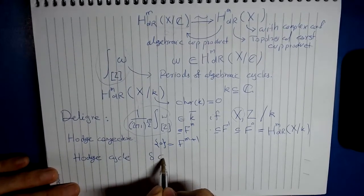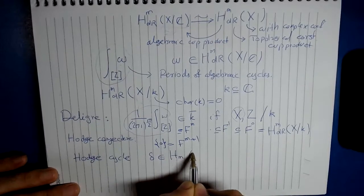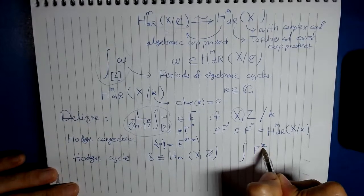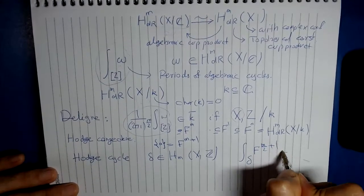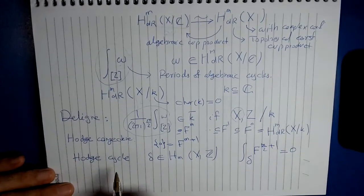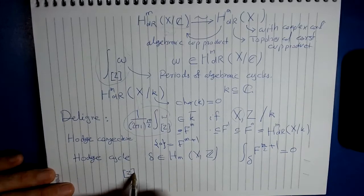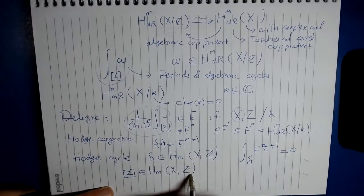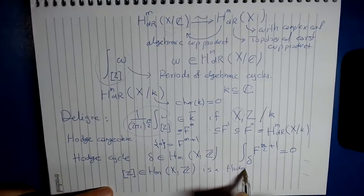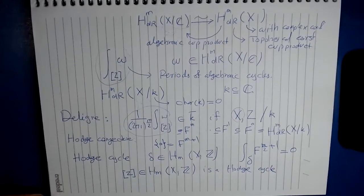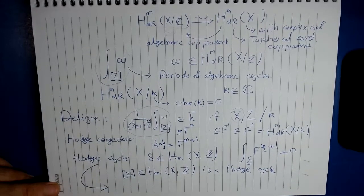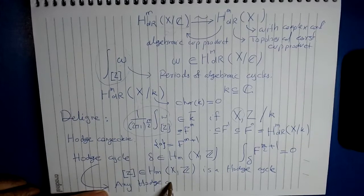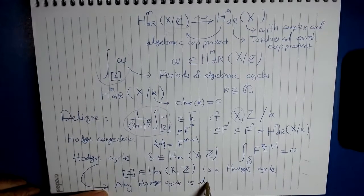Hodge cycle will be a cycle in H_m(X,Z) such that this part of the filtration F delta is 0. And it is a very simple observation that we will make, that the algebraic cycle that we had is a Hodge cycle. And then we will reach to this millennium conjecture, that any Hodge cycle is algebraic.